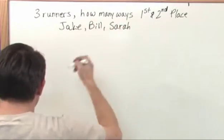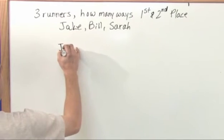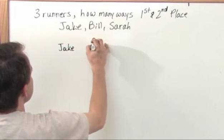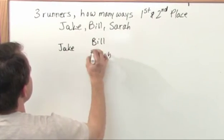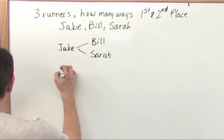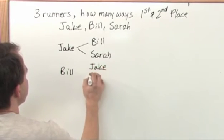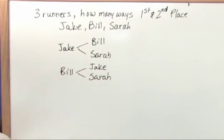What we did in the last section is we built our tree diagram. We said, well, Jake can finish first and once we pick Jake then Bill could finish second or Sarah could finish second. And we also said if Jake didn't finish first, let's say Bill finished first. Then Jake could finish second and Sarah could finish second.